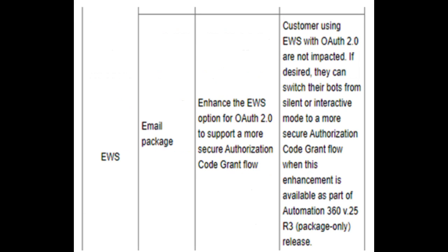Email Package: Enhance the EWS option for OAuth 2.0 to support more secure authorization code grant flow. Customers using EWS with OAuth 2.0 are not impacted. If desired, they can switch their bots from silent or interactive mode to a more secure authorization code grant flow when this enhancement is available as part of Automation 360 v.25r3 package-only release.